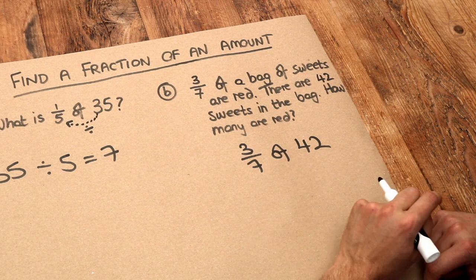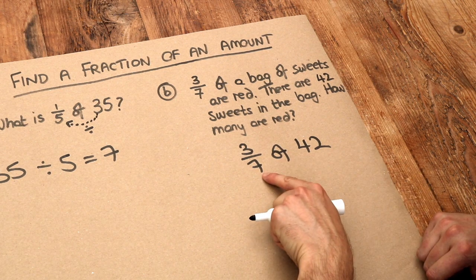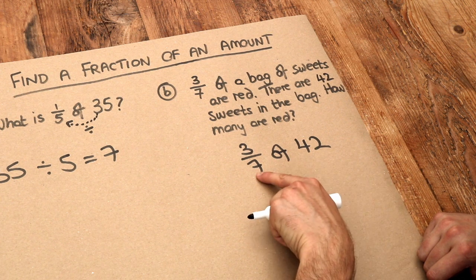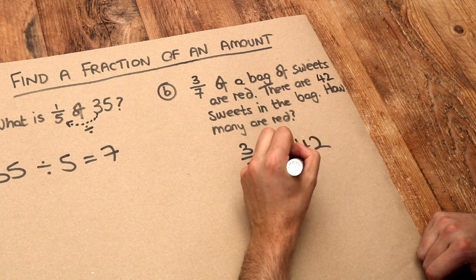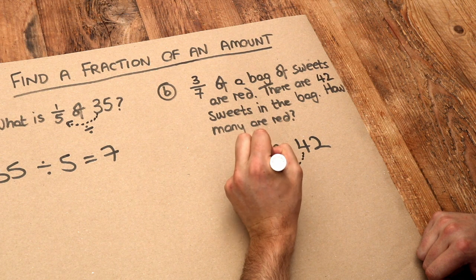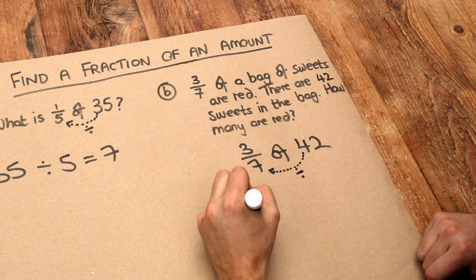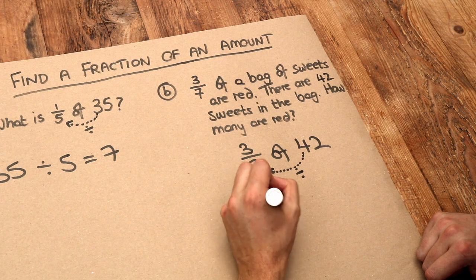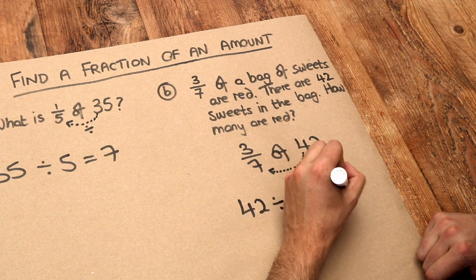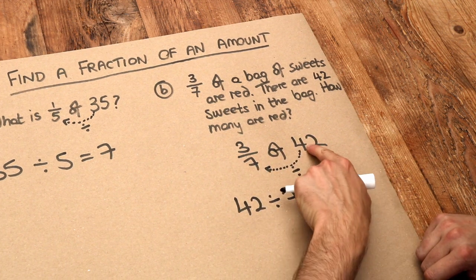To find 3 sevenths of something, let's first find a seventh of it. So we want to find a seventh of 42. To do that, we divide it by 7. So 42 divided by 7 is 6, and that will be a seventh of 42.